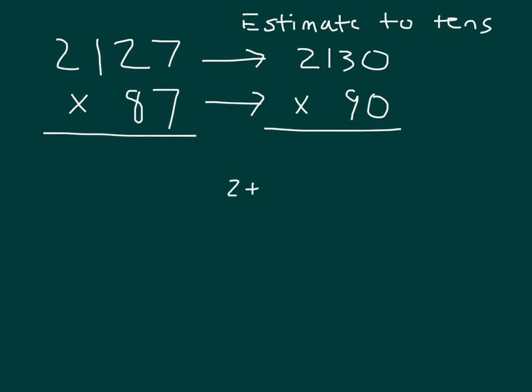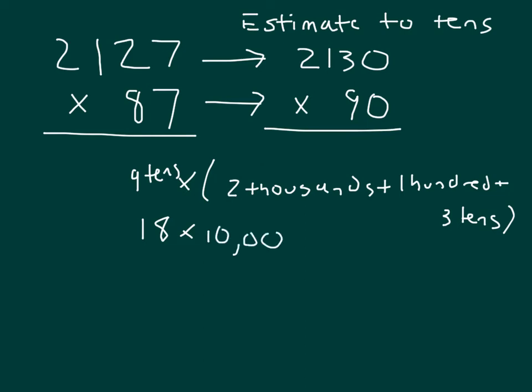So, breaking down 2,130 times 90, that's 2,000s plus 100 plus 30, which is 3 tens, and we're multiplying that by 9 tens. Distributive property: 9 times 2 is 18, and that's tens times thousands, which is 10,000, plus 9 tens times 100, we get 9 times 1 to begin with, and then we get 10 hundreds, which is a thousand, plus 9 times 3, which is 27, 10 tens, which is a hundred, so we get 27 hundreds.